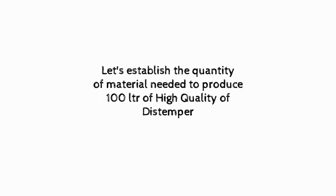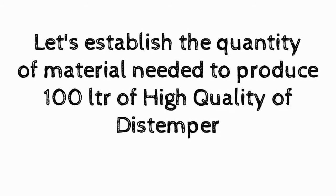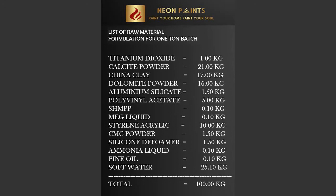Let's establish the quantity of material needed to produce 100 liters of high quality distemper. Titanium dioxide powder 1 kg, super white calcite powder 21 kg, china clay powder 17 kg, super white dolomite powder 16 kg, aluminium silicate powder 1.50 kg, polyvinyl acetate liquid 5 kg. Sodium hexametaphosphate powder 0.100 kg, monoethylene glycol liquid 0.100 kg, styrene acrylic liquid 10.00 kg, CMC powder 1.50 kg, silicone defoamer liquid 1.50 kg, ammonia liquid 0.10 kg.